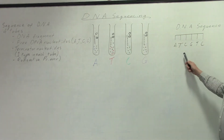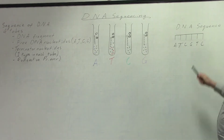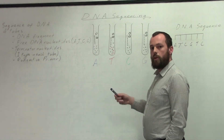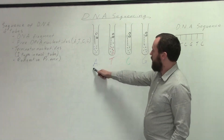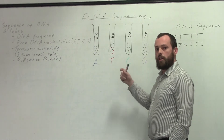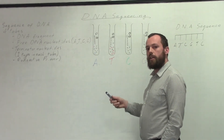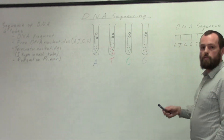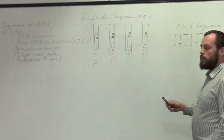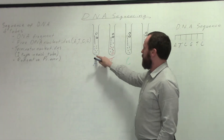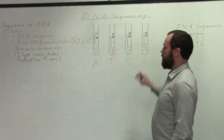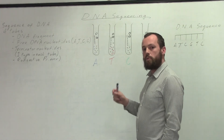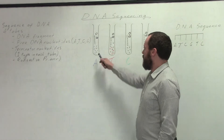So let's say I'm trying to sequence this fragment of DNA. We will only see a fragment one nucleotide long in the A tube, because it is only in this test tube that we have the A terminator nucleotides. So we will have, randomly, an A terminator nucleotide attach, because that's our first one. That will not happen in any of the other tubes, because there are no A terminator nucleotides. So we will only see a fragment which is one nucleotide long in the A tube.